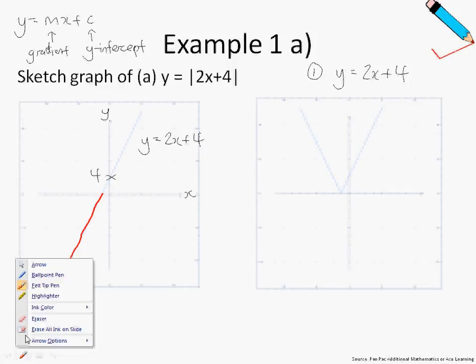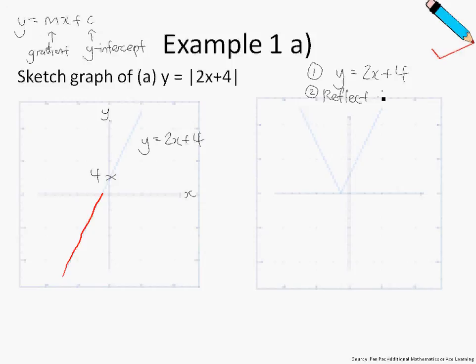Step 2 would be to reflect the region or the graph below the x-axis. This portion has been reflected upwards. And finally, this is the graph of y equals mod of 2x plus 4.